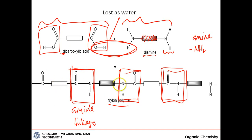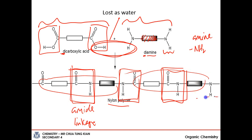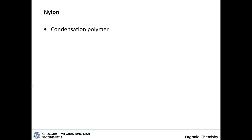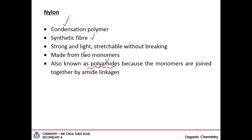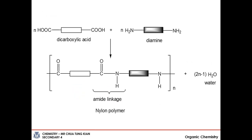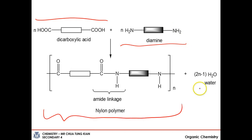The amide linkage is formed by a dicarboxylic acid monomer and a diamine monomer. When they join together and repeat, you get the very long nylon polymer. Because the linkages are amide linkages, nylon is also called a polyamide - many, many amide linkages making it up. Nylon is a condensation polyamide, synthetic, strong and light, made from two monomers. If a question says write a balanced equation to show the formation of nylon, you write the dicarboxylic acid and the diamine on one side, and the repeating unit of the nylon polymer plus the water molecule lost on the other.